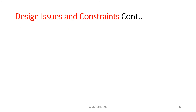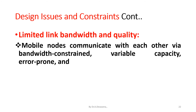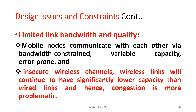The next constraint is limited link bandwidth and quality. Mobile nodes communicate with each other via bandwidth-constrained, variable capacity, error-prone, and insecure wireless channels. Wireless links will continue to have significantly lower capacity than wired links, and hence congestion is more problematic.